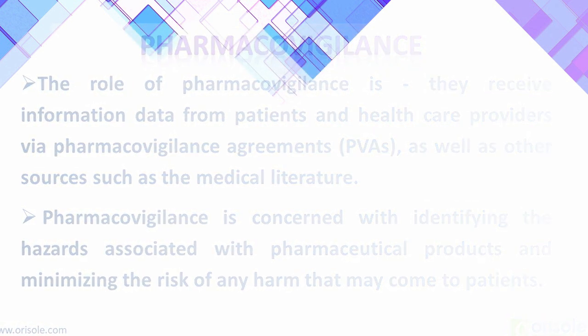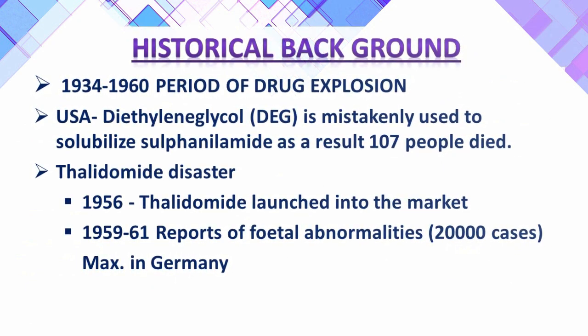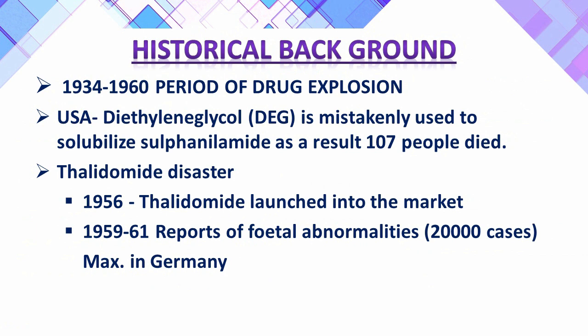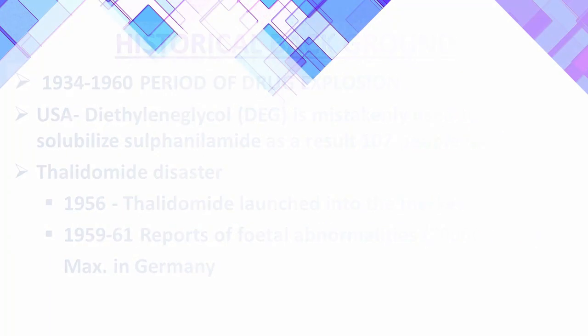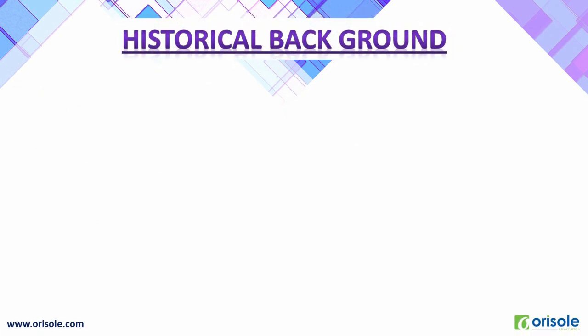Now let us see the historical background and evolution of pharmacovigilance. Between 1934 and 1960, the period is called the period of drug explosion. In the United States of America, diethylene glycol (DEG) was mistakenly used to solubilize sulfonamide; as a result, 107 people died. In 1956, thalidomide was launched into the market, and in 46 countries, thalidomide was mainly used by pregnant women for morning sickness.